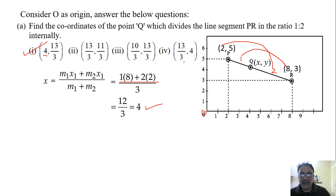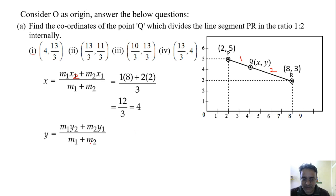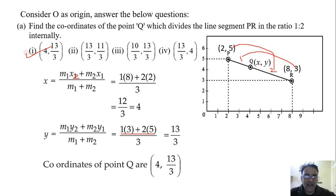But let us also calculate y for revision. Using the same section formula: y = (m1·y2 + m2·y1) / (m1 + m2) = (1×3 + 2×5) / (1+2) = (3 + 10) / 3 = 13/3. So the coordinates of Q are (4, 13/3), confirming the answer is the first option.